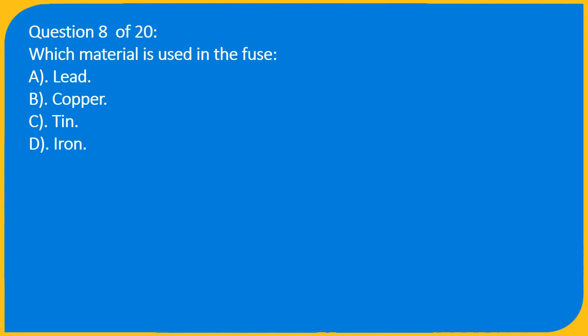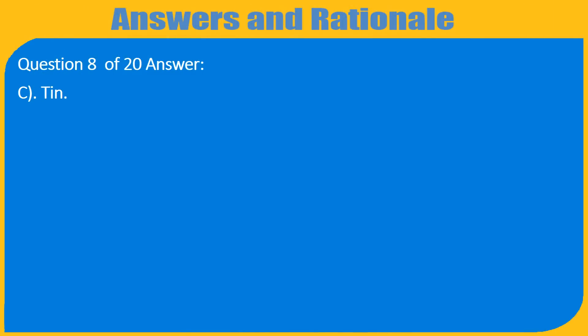Question 8 of 20: Which material is used in a fuse? A. Lead, B. Copper, C. Tin, D. Iron. Answer: C. Tin.